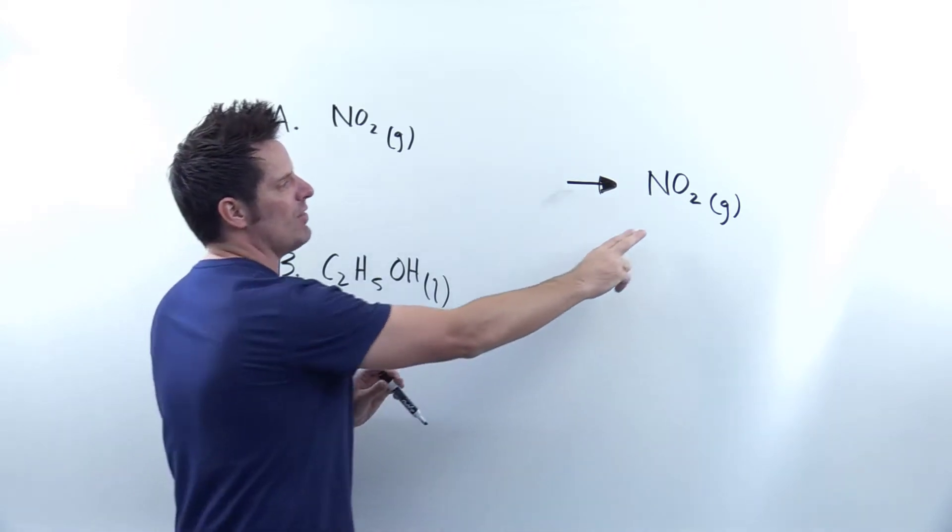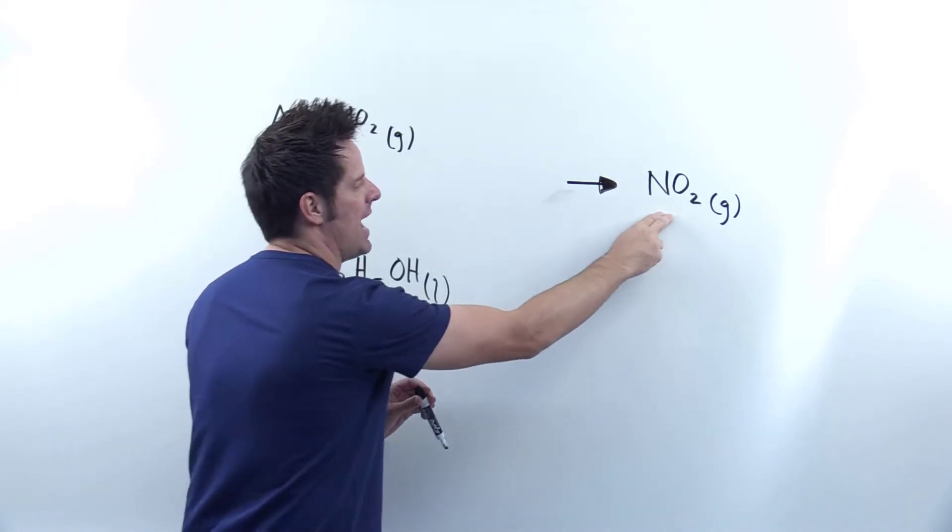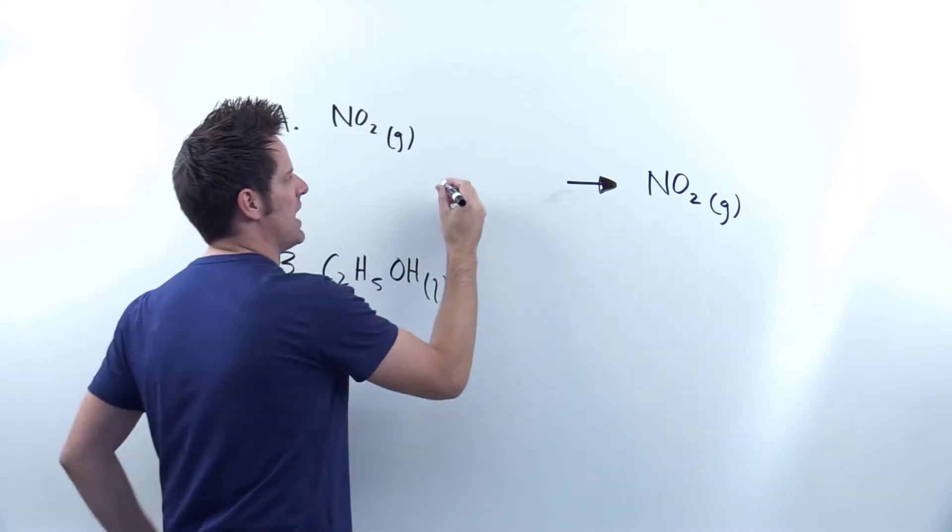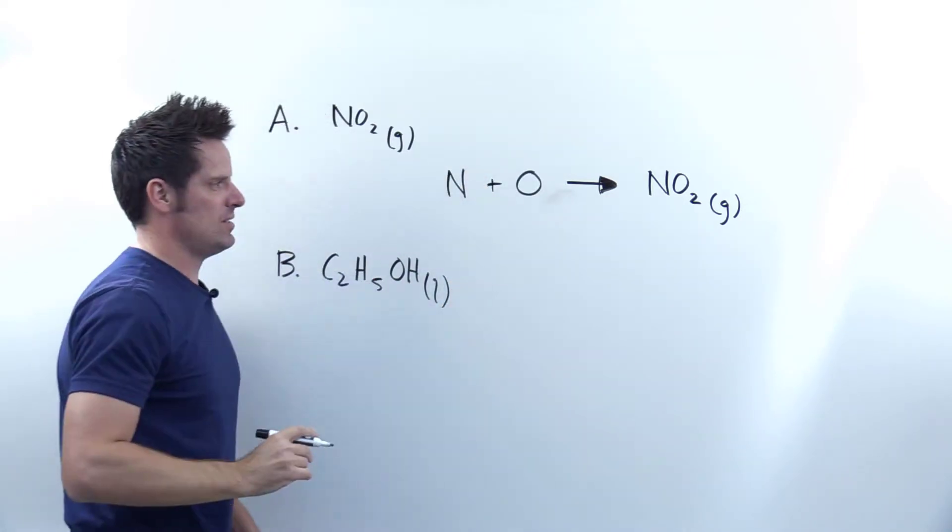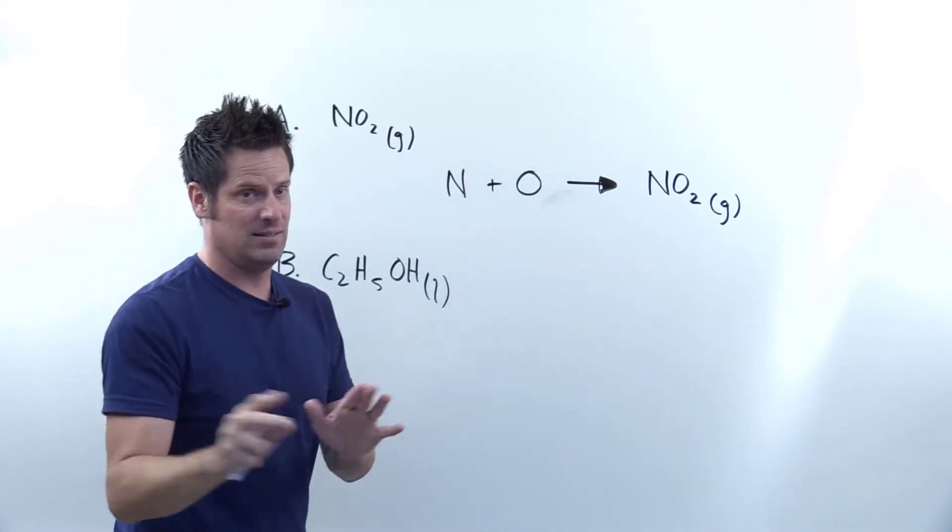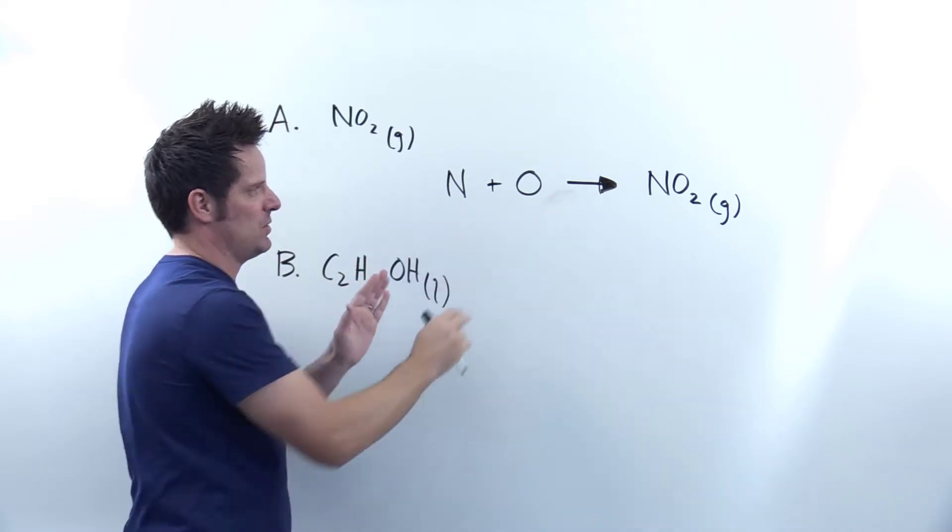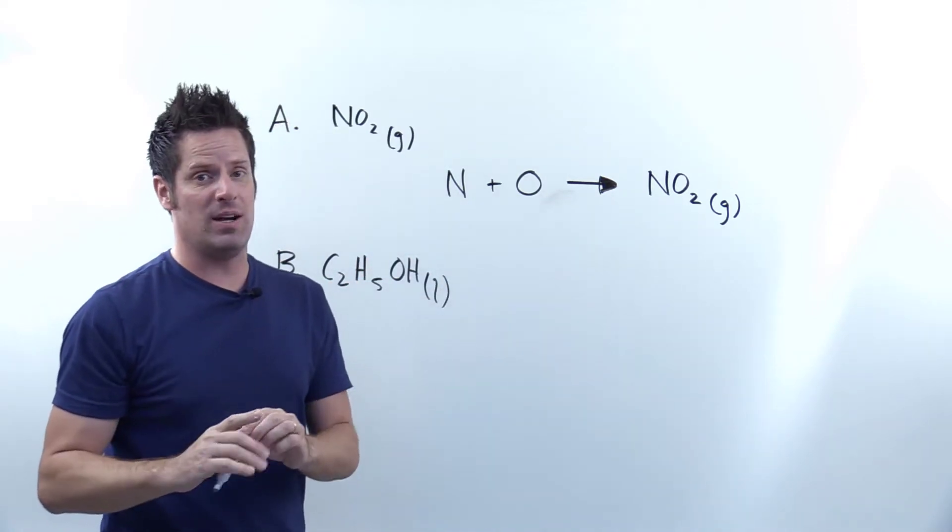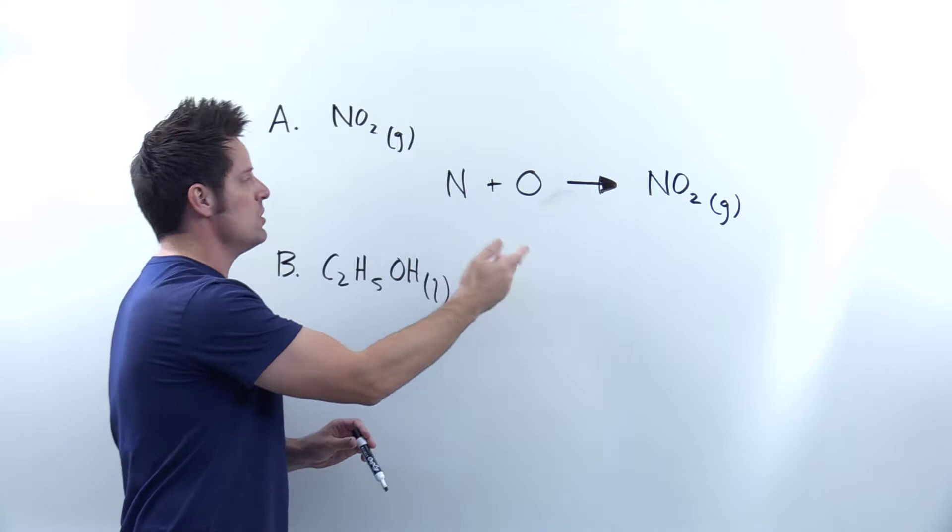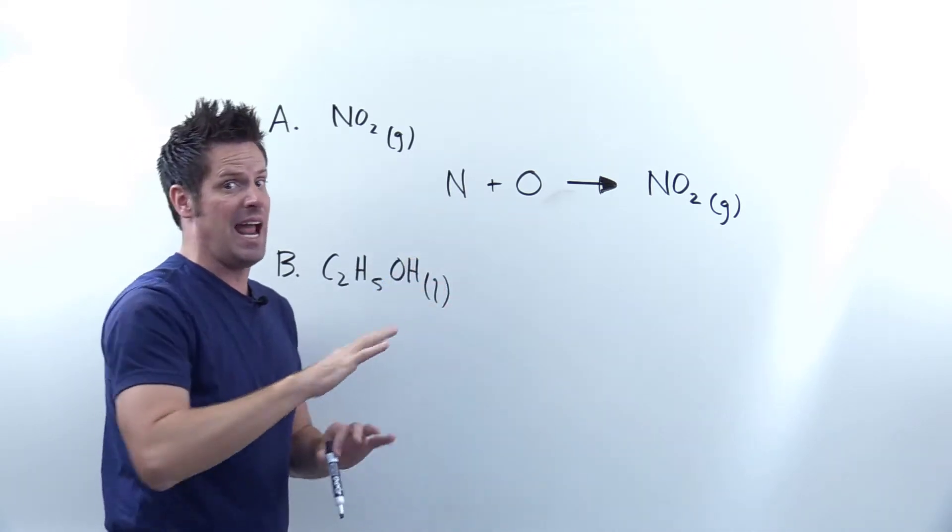Step two is look at all of the elements in that compound and write them on the left side of the equation, like this. Now we're not done yet. This is just the beginning of this process. For most elements on the periodic table, when you do this step, you just write down the elemental symbol and you're done.